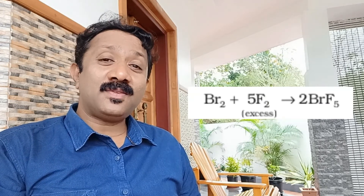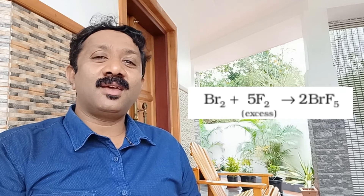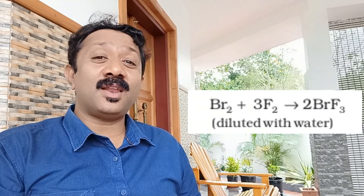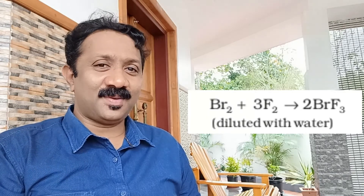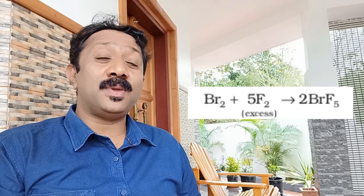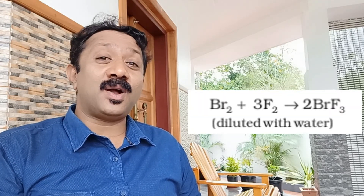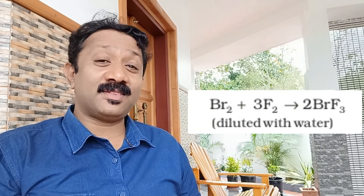In excess fluorine, following a ClF3 pattern: Br2 plus 5F2 gives 2BrF5. That is the XX'-5 type example. Also, Br2 plus 3F2 gives 2BrF3 — that is the XX'-3 type. At 300°C, Br2 plus 5F2 gives 2BrF5.